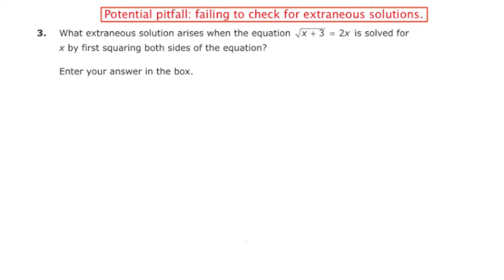Hey there, this is MathCamp321 bringing you question number 3 of the PARC Algebra 2 practice test from 2014-2015 school year. This question says, what extraneous solution arises when the equation √(x+3) = 2x is solved for x by first squaring both sides of the equation.